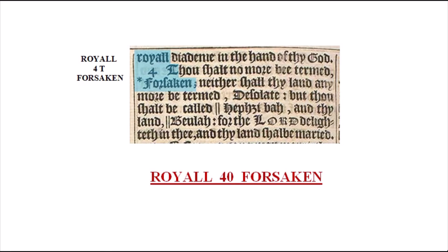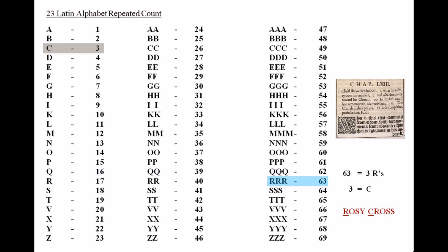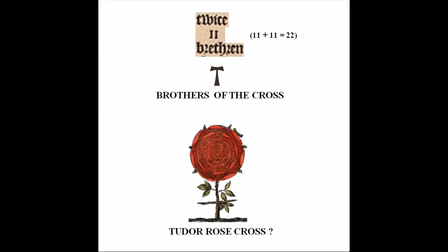Above Isaiah 63, at the top of the page, an acrostic stands out: 'Royal Forty' or 'Forty Forsaken.' The Prince-Tudor theory I was referring to claims Oxford was banished to live out his days on Mercy Island. Or is it that, at the end of his life, de Vere had lost everything and whoever encoded this is asking God to have mercy on him? This is why it's in chapter 63. With the repeated count, 63 is equal to three letter R's; three is equal to the letter C, so 63 is a way to encode RC for Rosy Cross. In Hebrew, the 22nd and final letter is Tav or Tau. So 'Twice Eleven Brethren' translates to Brothers of the Cross, and I wonder if the Tudor Rose has anything to do with Rosy Cross.